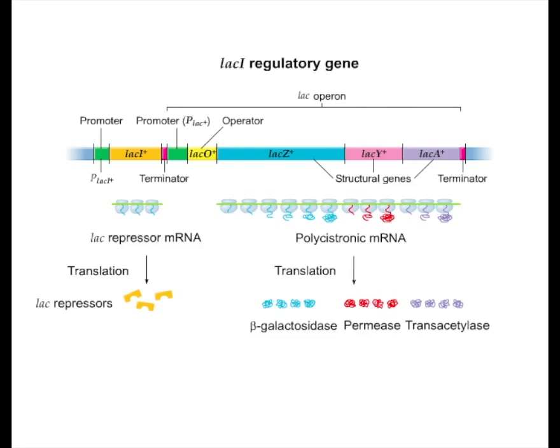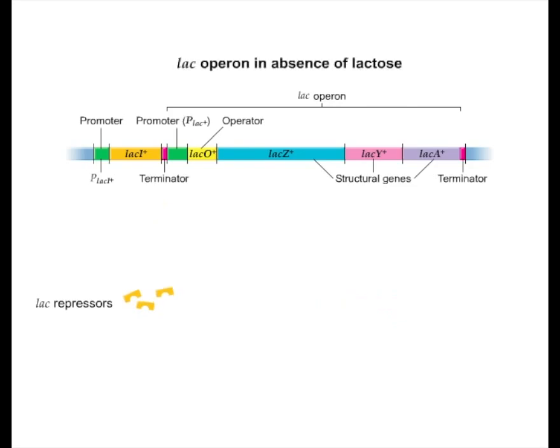The lac regulatory protein is called a repressor because it keeps RNA polymerase from transcribing the structural genes. In the absence of lactose, the lac repressor binds to the operator and keeps RNA polymerase from transcribing the lac genes.